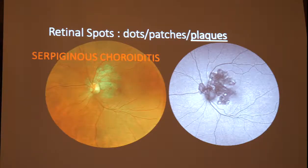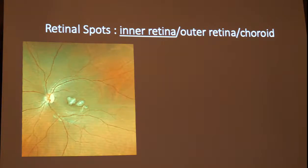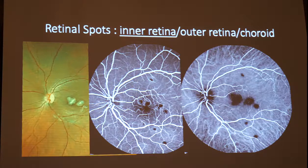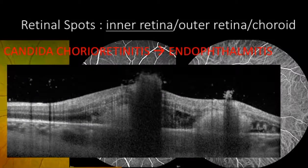The second element to focus on when analyzing retinal spots is the level of inflammation. Retinal inflammation may be localized mainly in the inner retina, the outer retina, or the choroid. This patient presented with discrete yellow spots in the macula; on fluorescein angiography and ICG they were hypofluorescent. However, the OCT revealed hyporeflective material present in the choroid, intraretinally, and already in the vitreous — a case of Candida chorioretinitis that had become an endophthalmitis, in which case you may want to call your vitreoretinal surgeon.